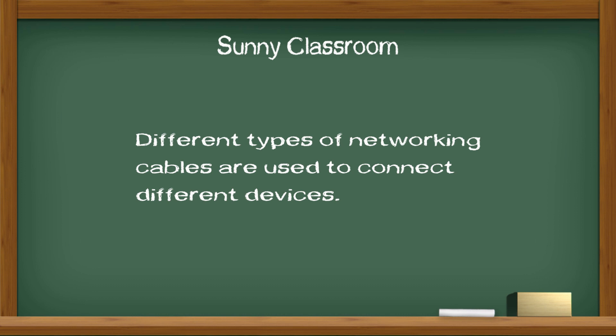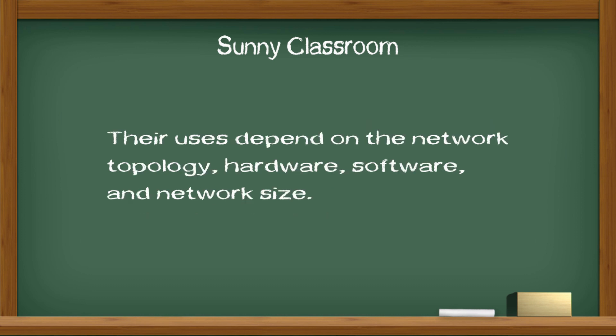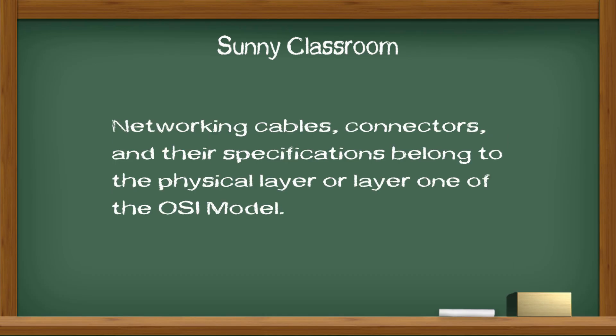Different types of networking cables are used to connect different devices. In networking, the most common cables include coaxial cable, twisted pair, optical fiber, and parallel or serial cables. Their uses depend on the networking topology, hardware, software, and network size. Networking cables, connectors, and their specifications belong to the physical layer, or Layer 1, of the OSI model.